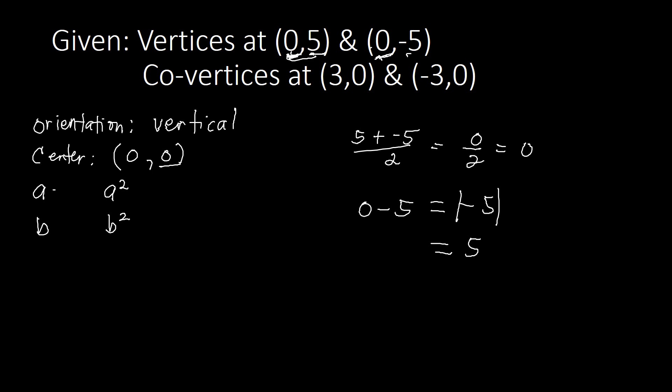Or if you use vertex to vertex: both have the same X value, so we look at the Y values: 5 minus negative 5 equals 10. This is the length of the major axis, which equals 2A. So 10 divided by 2 gives A equals 5. Either method gives the same result. So A equals 5 and A squared equals 25.